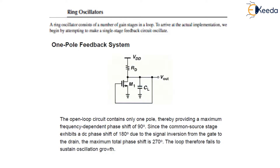In the figure, it is shown a one pole feedback system. It is seen that the open loop circuit contains only one pole, thereby providing a maximum frequency dependent phase shift of 90 degrees. We have already seen in the earlier lectures of unit 3 that there is one pole in the circuit and it provides a phase shift of 90 degrees. Since the common source stage, as shown in the figure, exhibits a DC phase shift of 180 degrees due to the signal involvement from the gate to the drain, the maximum total phase shift will be equal to 270 degrees.